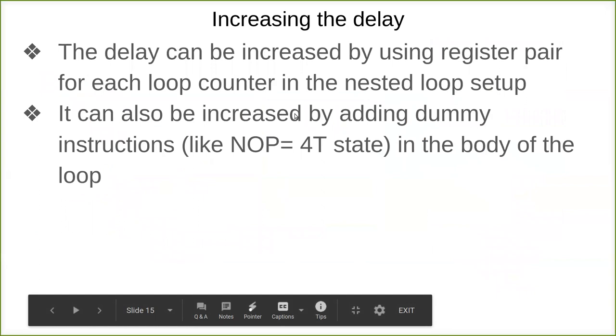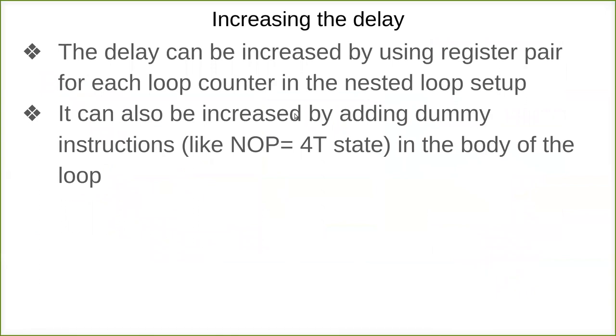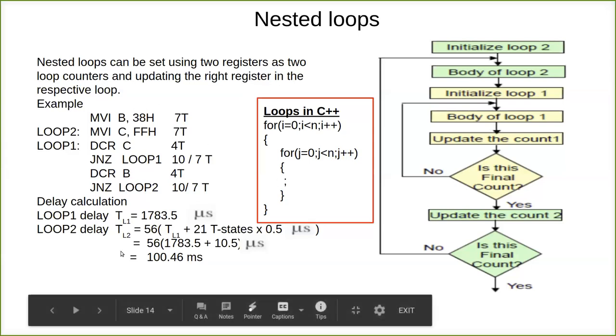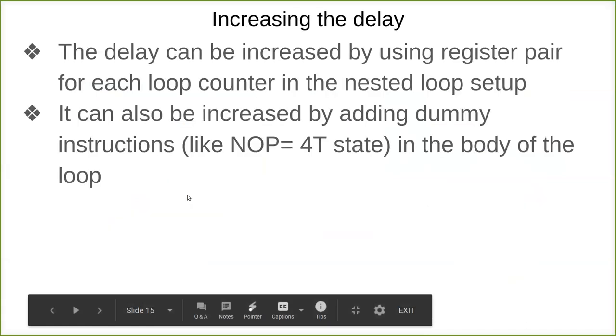This delay can be increased. How can you increase it? Either you can have another loop within this, you can set another loop. Likewise, you can increase, or you can use a register pair itself here. You can use LXI BC, LXI HL. Like that, two register pairs you can use. So 16 bit into 16 bit, that much time you can delay the loop.